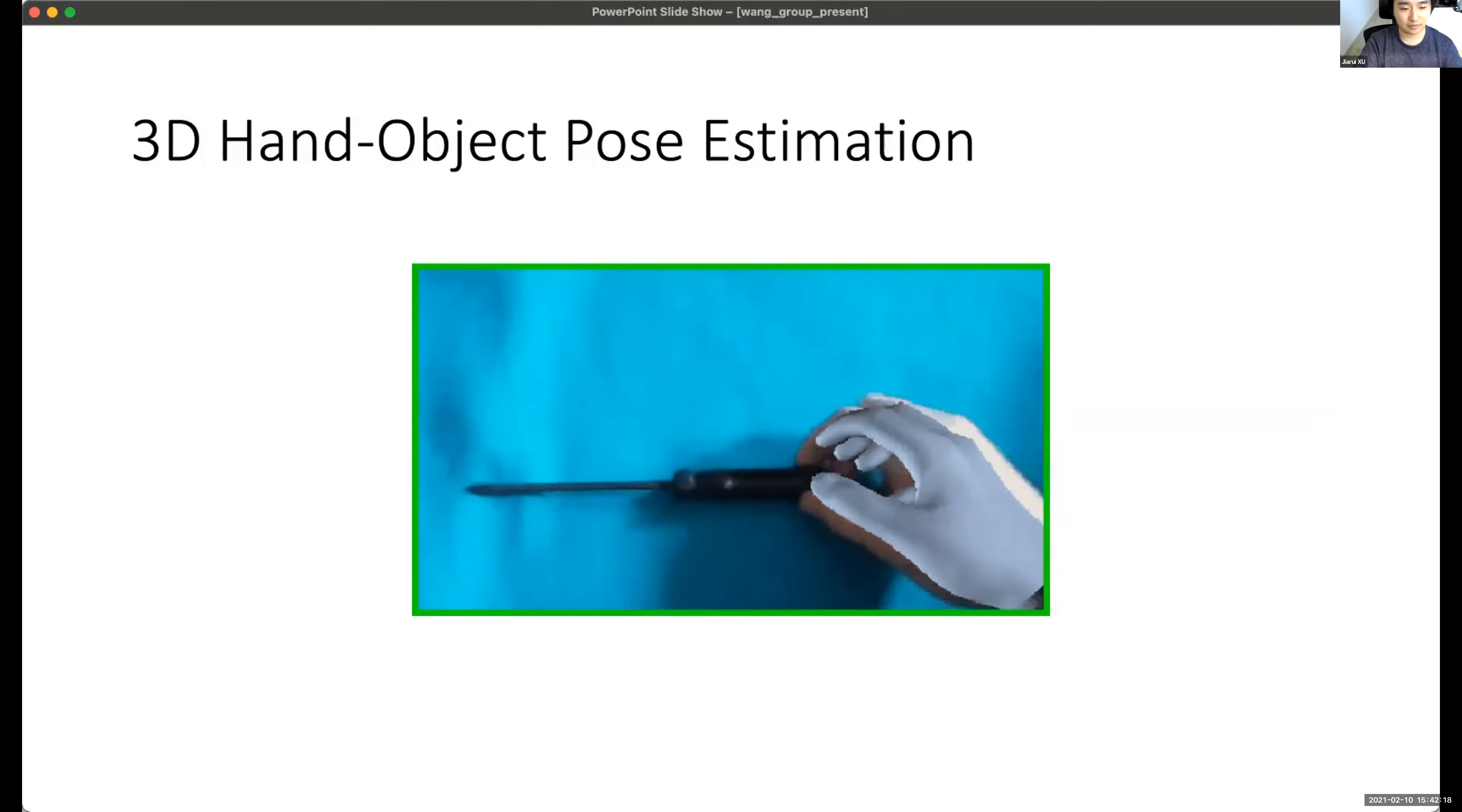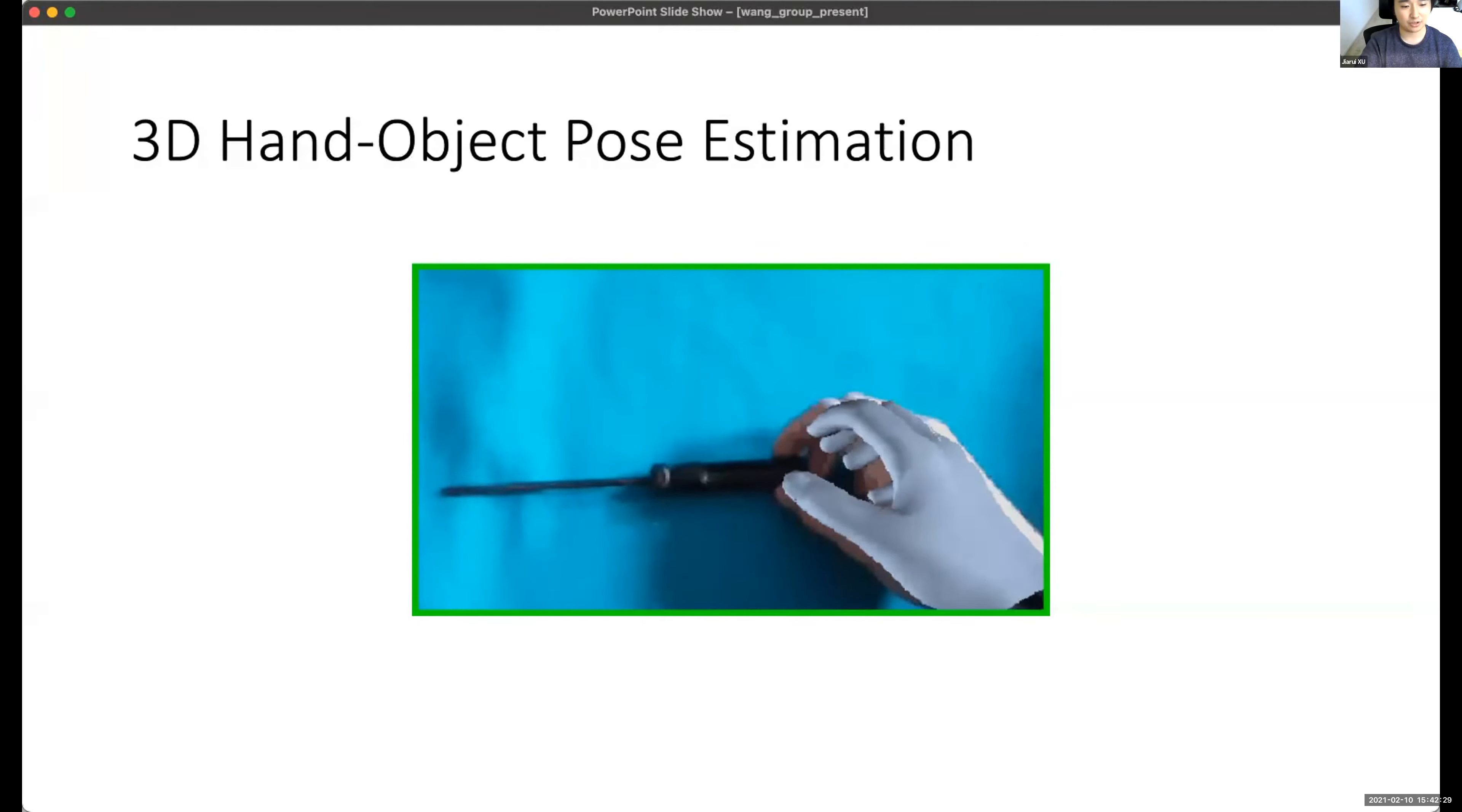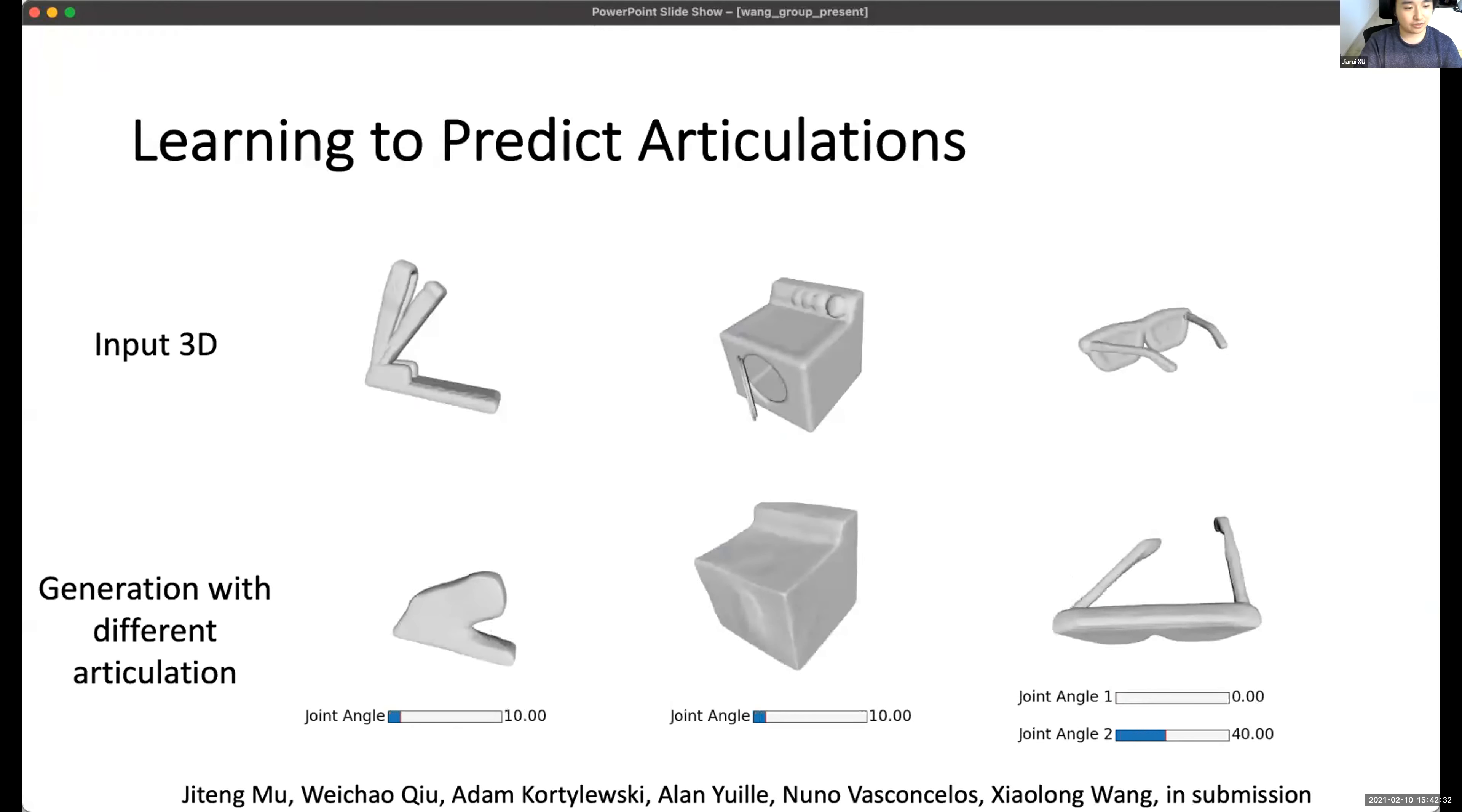And it's trying to pick up a screw. And you can see that the hand pose is very reasonably generated, a small shaped hand pose to grasp the screw.